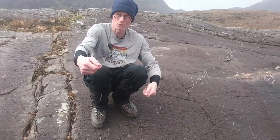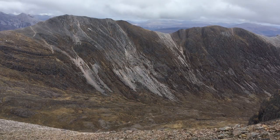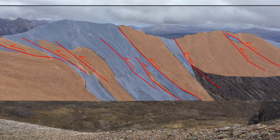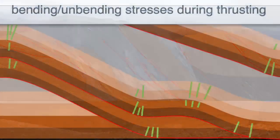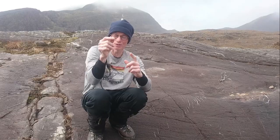And when you have thrusting, where beds are stepping over each other like we have around here, then you get complex interplays of bending and then unbending and then bending in opposite directions as well, as the beds step over one another. And that's probably what's produced the very complex sets of tension gashes that we see here.